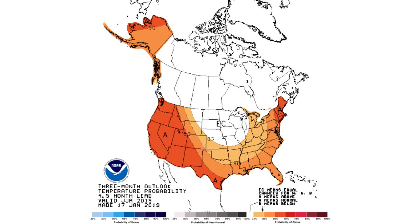Looking at NOAA's current seasonal forecast for June through August, both coasts are above average with that central United States region in the below-average or average temperature range. My current thoughts are quite similar — I think it'll be centered a little further west than what NOAA is showing, but I do agree we're most likely looking at above-average temperatures on both coasts with average or below-average temperatures setting up somewhere in the central United States.